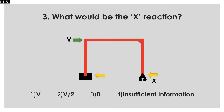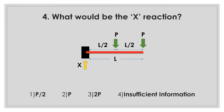What would be the X reaction? We have a frame with a lateral load, and the frame has two support points — one is fixed and the other one is a roller. The question is asking about the horizontal reaction in the roller. Since we have a roller support condition here, it will not produce a horizontal reaction.